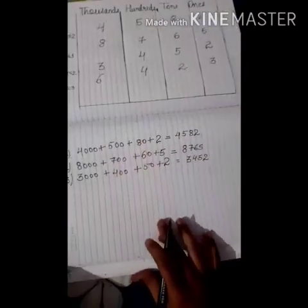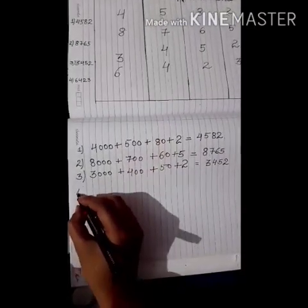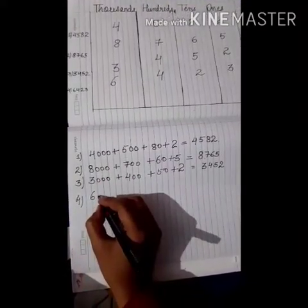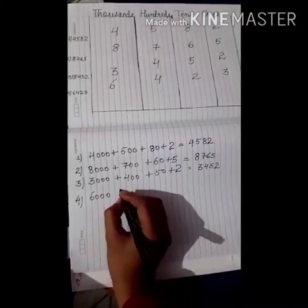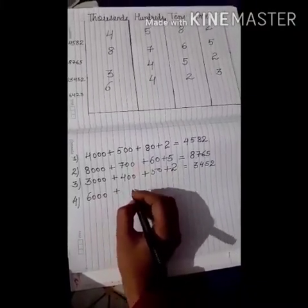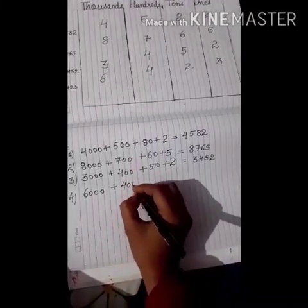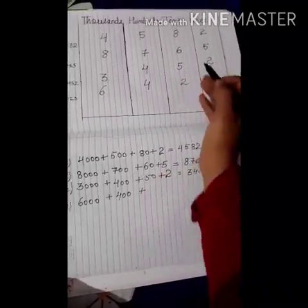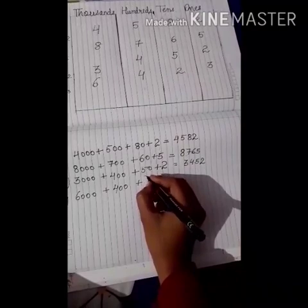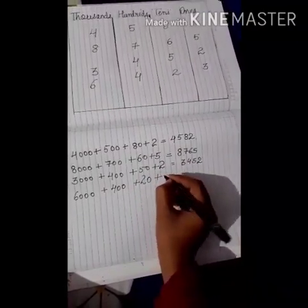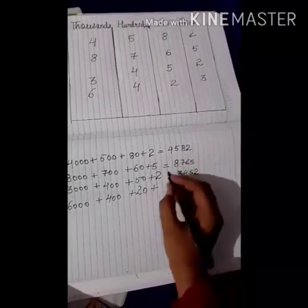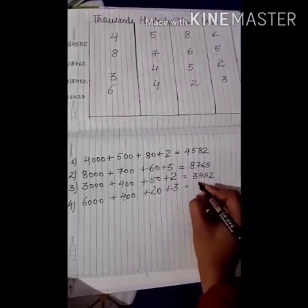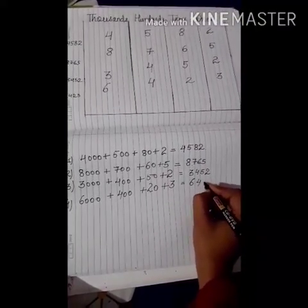So now we will write this in expanded form. 6 is on the 1000's place, so in 1000's we have 3 zeros — 1, 2, 3. Plus 4 is on the 100's place, so in 100's we have 2 zeros — 1, 2. 2 is on the 10's place, so in 10's we have only 1 zero. And 3 is on the 1's place, so in 1's we have no zeros, so we write 3 as it is. So we have 6423.